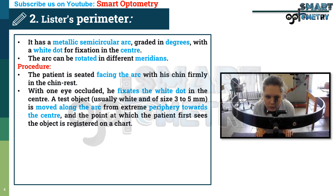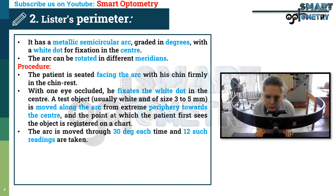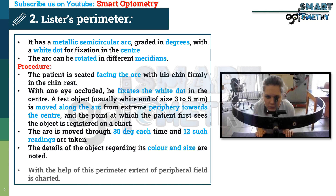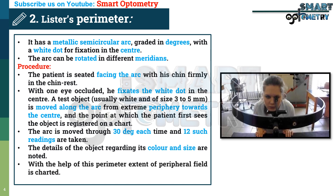A test object, usually white and of size 3 to 5 mm, is moved along the arc from extreme periphery towards the center. The point at which the patient first sees the object is registered on the chart. The arc is moved through 30 degrees each time and 12 such readings are taken. The details of the object regarding its color and size are noted. With the help of this perimeter, the extent of peripheral visual field is charted.